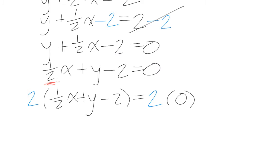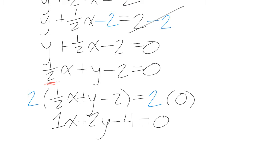We're going to use the distributive property to distribute that 2 to everything within the brackets using multiplication. So that becomes 1x, this becomes 2y, and this becomes negative 4, and that becomes 0. But remember, we don't like to write the 1 in, so this can be simplified to just x plus 2y subtract 4 equals 0.